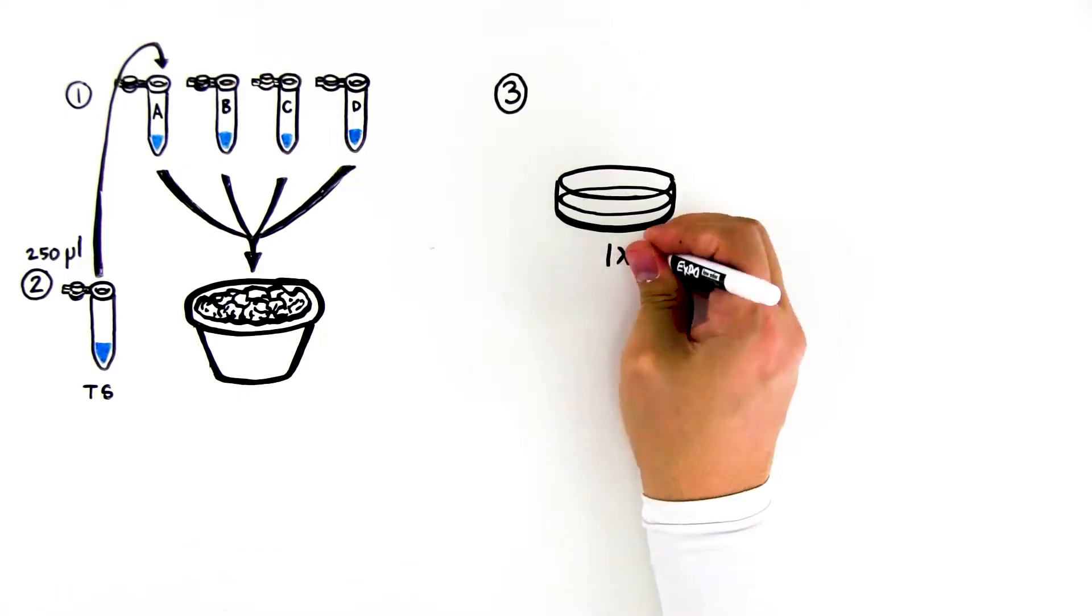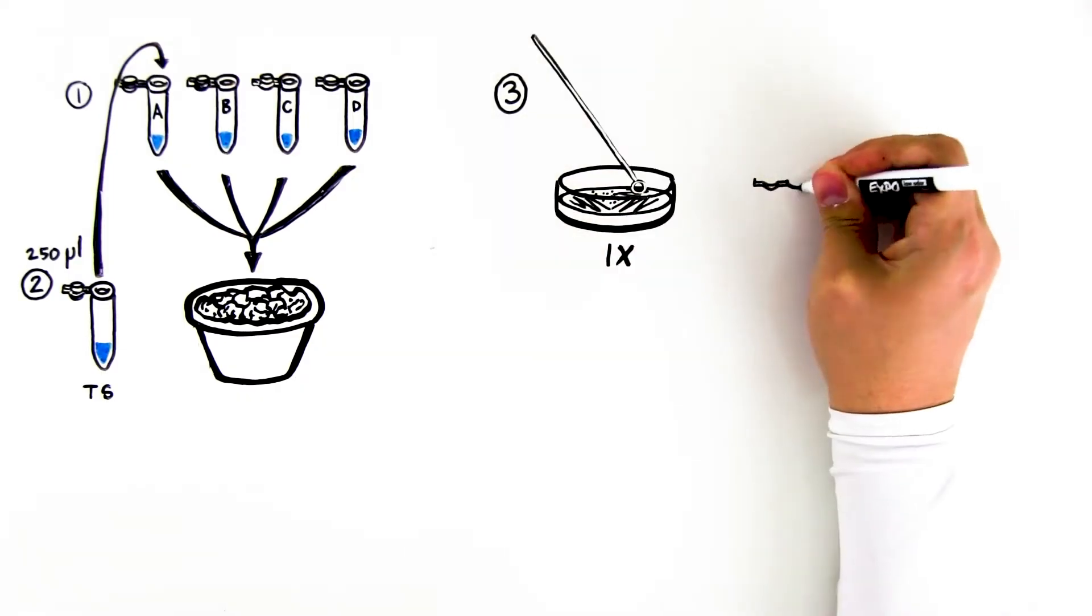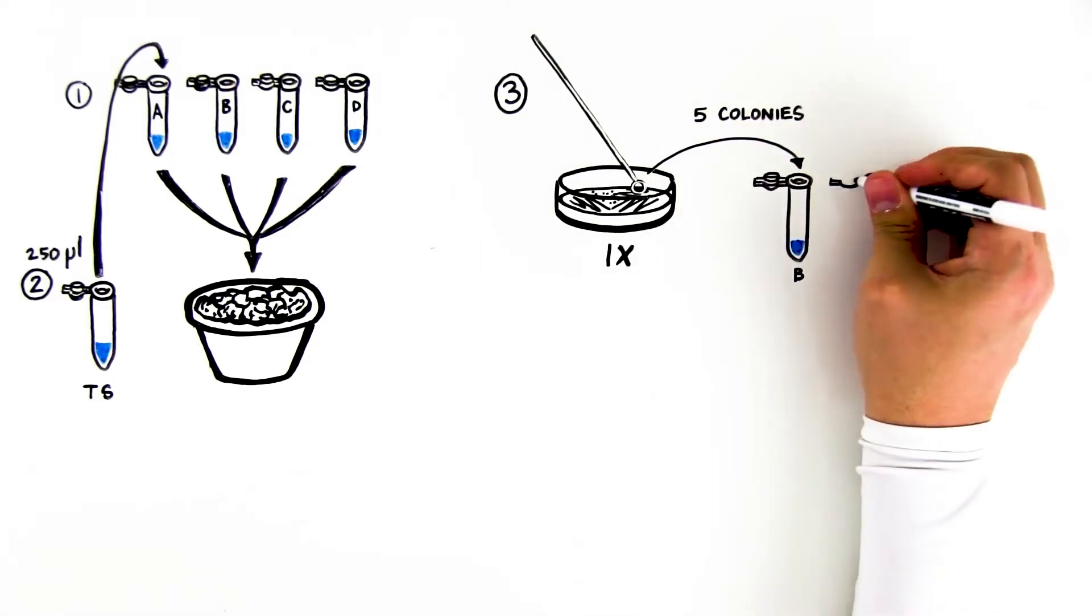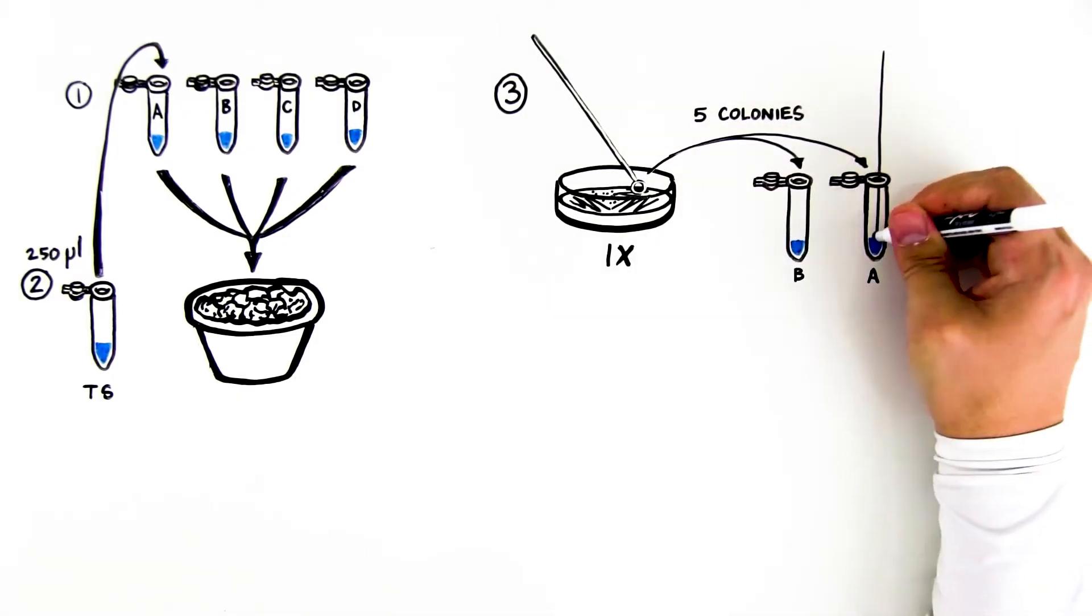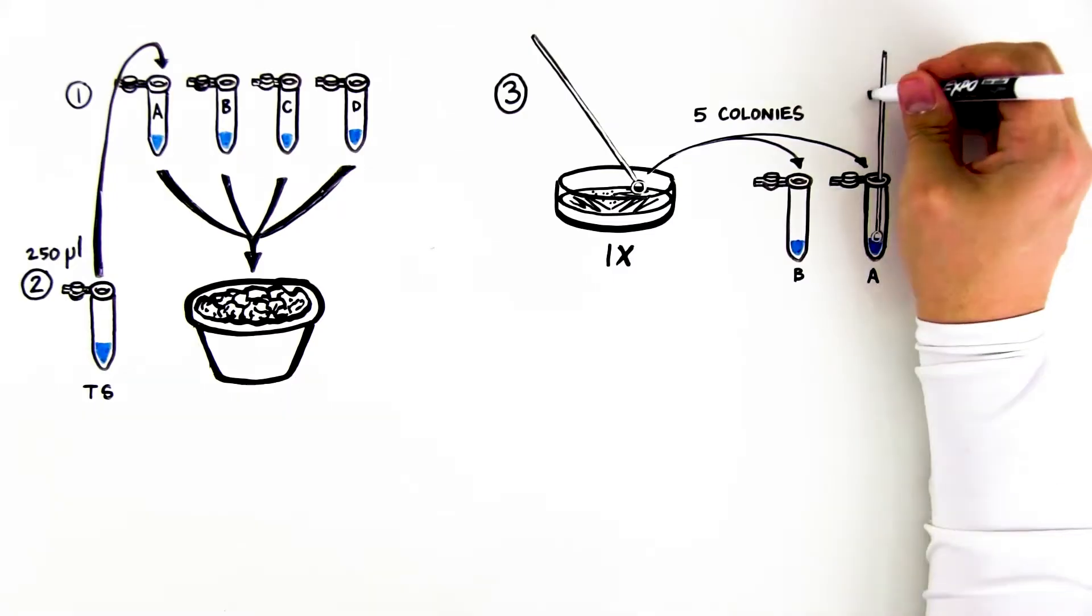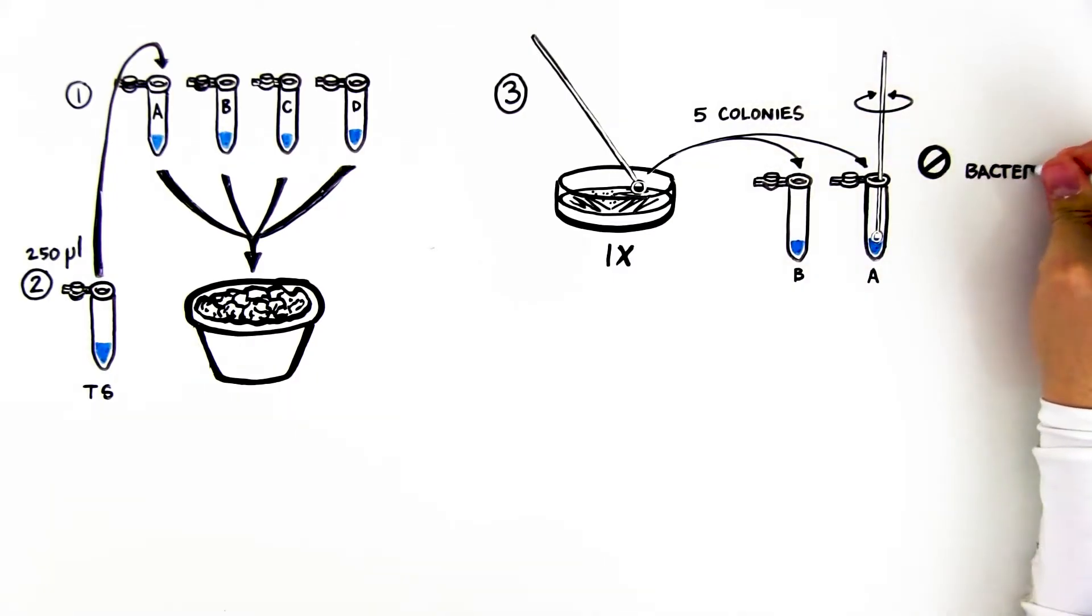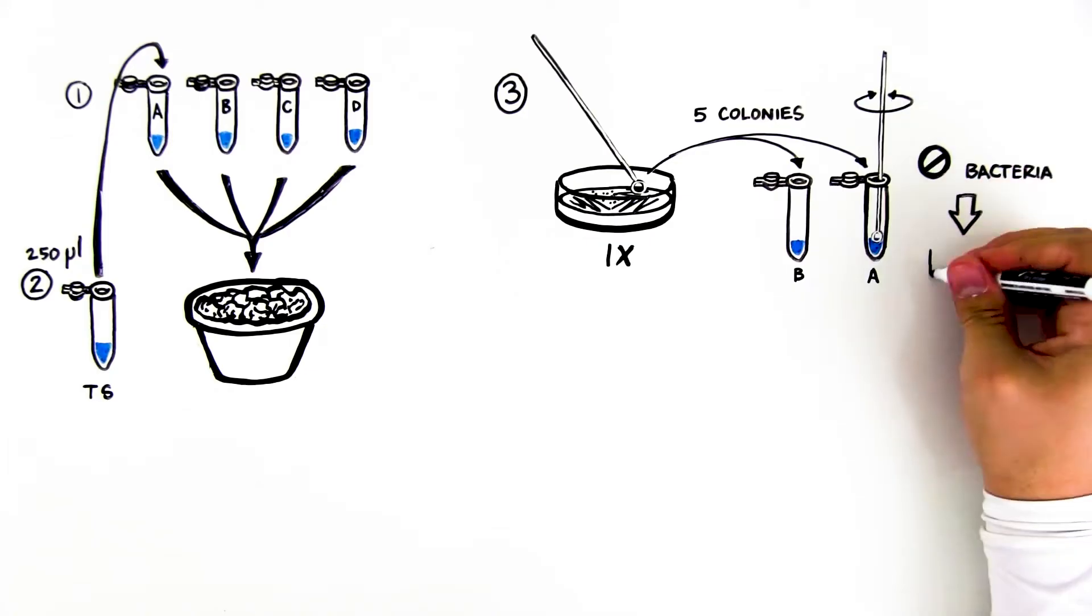Step 3: Using a new inoculation loop, pick five colonies from the IPTG-XGAL plate labeled IX. Swirl the loop in tube A for at least one minute until all the bacteria are dispersed in the solution. No bacteria should remain on the loop. Immediately place tube back on ice.